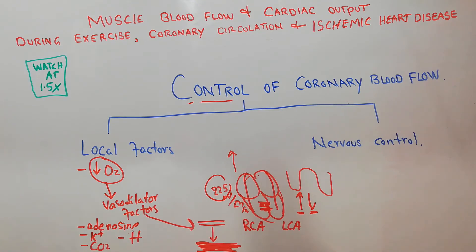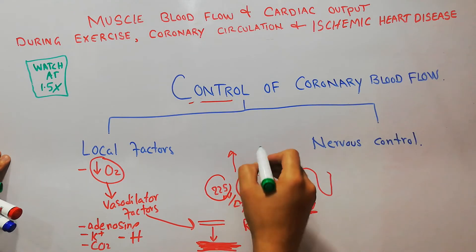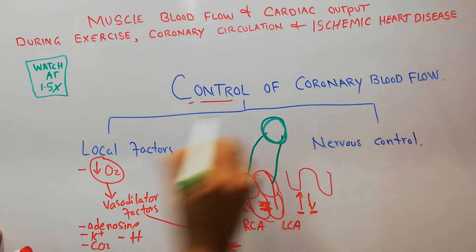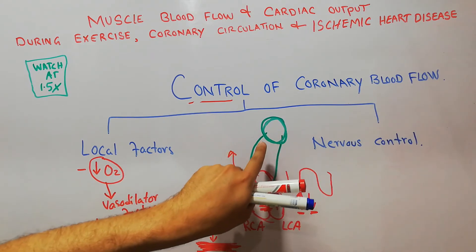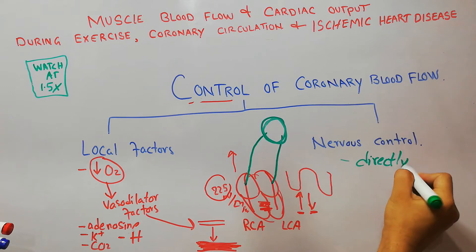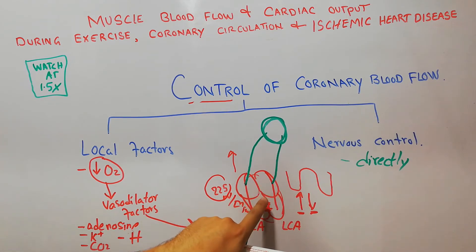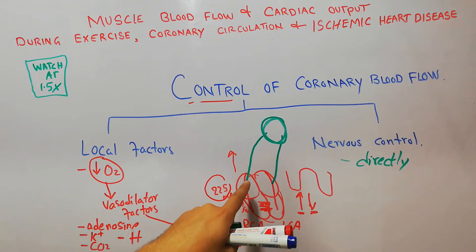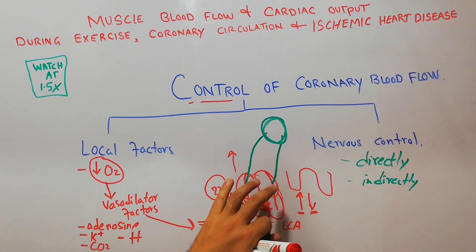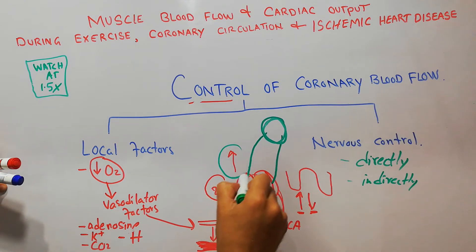Apart from local factors, there are nervous factors which increase or decrease the coronary blood flow. The most important nervous factors involve the innervation of the heart muscles and the coronary blood vessels. From the brain, sympathetic nerves and parasympathetic nerves innervate the blood vessels directly, and they may activate the heart muscles or increase the metabolism of the heart, increasing blood flow indirectly.